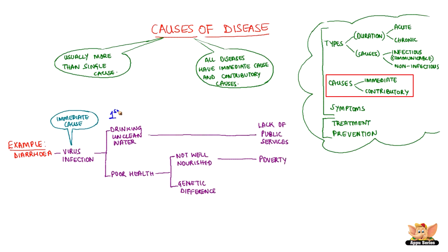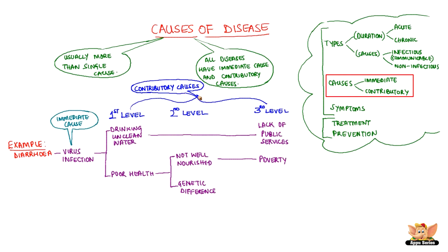Hence, drinking unclean water is said to be the first level, undernourishment the second level, and lack of public services the third level. All of these are contributory causes. Now we have exactly three cases. First cause: virus infection due to drinking contaminated water, due to lack of public services.